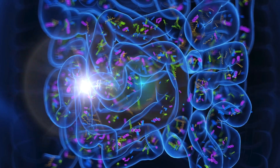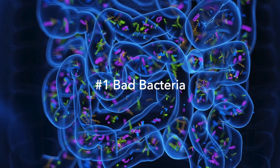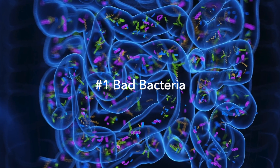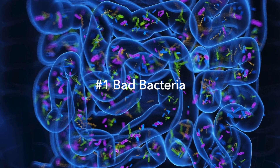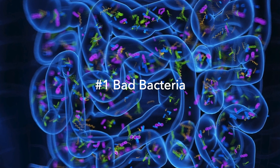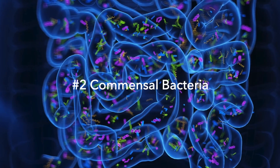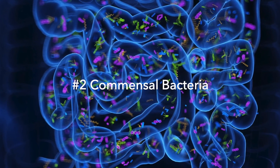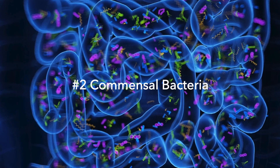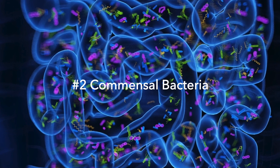Within our gut, we have three classes of gut bacteria. We have bad bacteria — things like H. pylori, E. coli, Salmonella, and C. diff. We have commensal or keystone bacteria, which are the good bacteria we expect to see as part of our microbiome. And we have opportunistic bacteria — things like Klebsiella, Morganella, Pseudomonas, Staphylococcus, and Streptococcus.